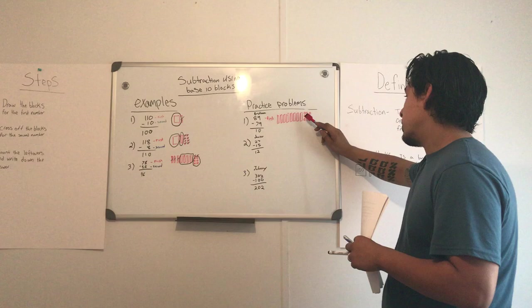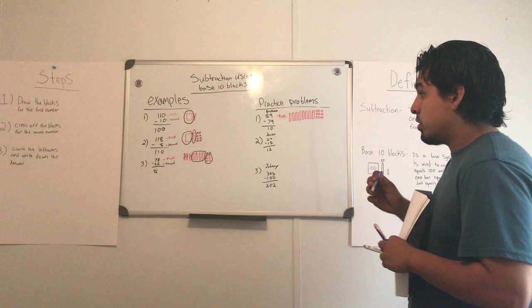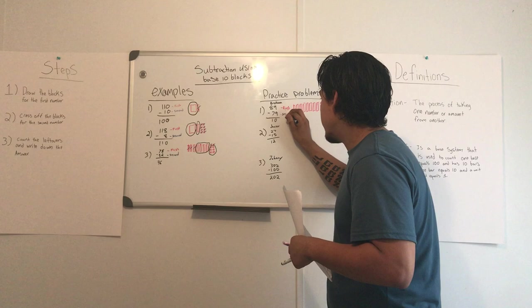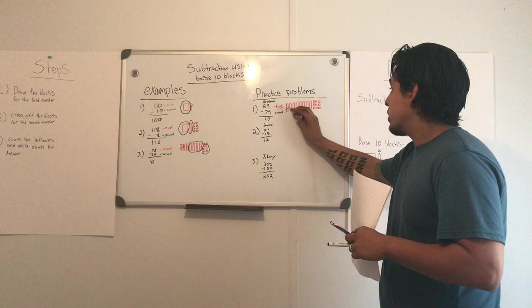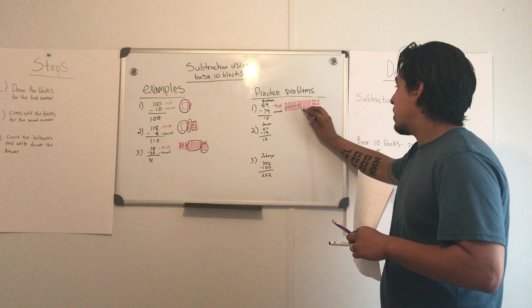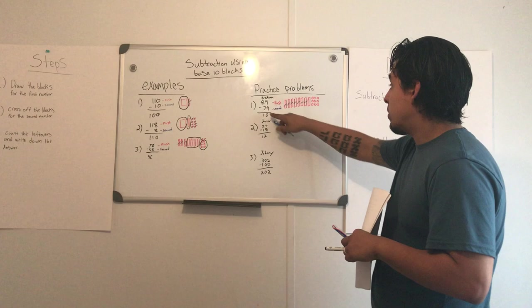So for her second step, she crossed out the numbers for the second number. And she knows that there are seven bars, so she crosses out seven bars because 7 was 70. And then she crossed out the nine units.